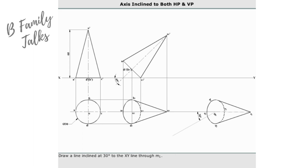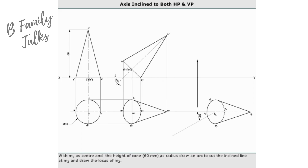Draw a locus of O1 and O2 and locate the point M1 on the locus. Draw a line inclined at 30 degrees to the XY line through M1. With M1 as center and the height of the cone, 60 millimeters, as radius, draw an arc to cut the inclined line at M2, and draw the locus of M2.